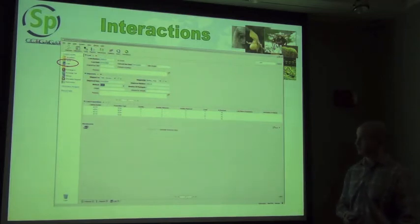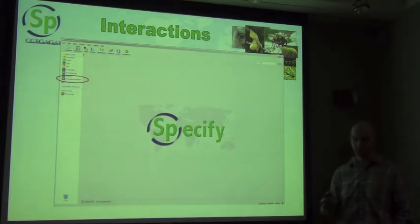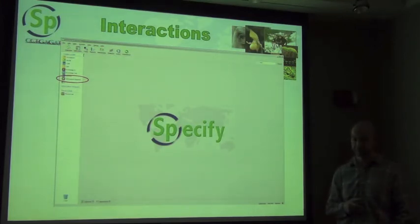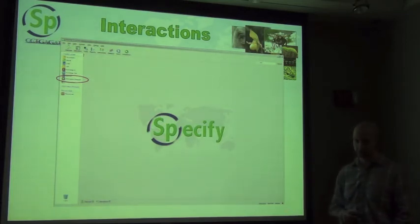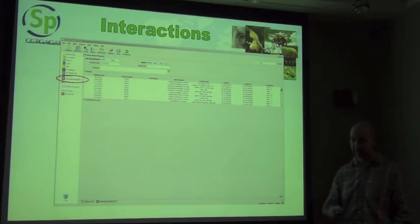You can then generate an invoice for that particular loan and send it out to the respective party. One of the other things incorporated into Specify is information requests, which allows you to keep track of all information requests you get for data in your collection. If somebody emails you about a particular genus, you can do a search, create a record set, and create an information request. There is an email client built into Specify so you can automate the process of sending that Excel spreadsheet of data directly from within Specify, and it keeps track of all information requests received so you can report on how many you've handled.